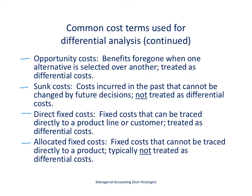There are four more terms to take a look at, as outlined on this slide. First, opportunity costs — these are the costs and benefits foregone when one alternative is selected over another, and they're treated as differential costs. I like to say these are what we give up to get something else. Continuing the product line example, if we're considering eliminating our desktop computer product line, we might be able to use that space to expand other product lines, and the benefits from that expansion would be part of our differential analysis.